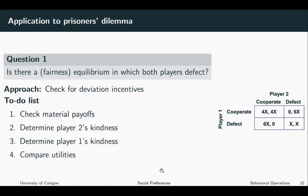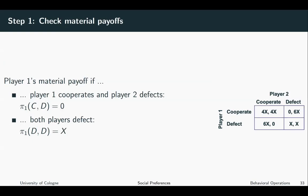What do we have to do? First of all, we have to check the material payoffs, which is quite easy. Then in the second step, we will determine player two's kindness, or player one's belief about player two's kindness. And finally, we will determine player one's kindness, or player one's belief about player one's kindness. Then finally, we will compare the utilities, and by comparing the utilities, we can check if players have deviation incentives. Let us start with checking the material payoffs.